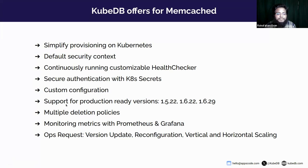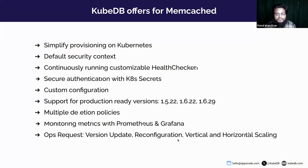KubeDB supports multiple versions of Memcached like 1.5.22, 1.6.22, and 1.6.29. It has secure authentication to the Memcached database using Kubernetes secrets and provides custom configuration support. It supports multiple deletion policies: do not terminate, delete, and wipeout. It supports monitoring for Memcached using Kubernetes and Grafana. It has multiple OpsRequests like version update, reconfiguration, vertical scaling, and horizontal scaling.